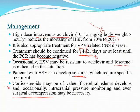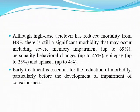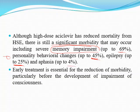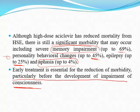The mortality has become 20%, but there is still significant morbidity. Up to 69% will develop memory impairment due to limbic system involvement. Personality and behavioral change may happen in 45% due to orbitofrontal involvement. Epilepsy occurs in up to 25% due to mesial temporal involvement. Aphasia may occur due to inferior frontal involvement — the area of Broca. Early treatment is essential for the reduction of morbidity, particularly before the development of impairment of consciousness.